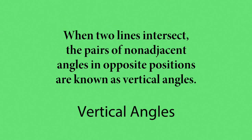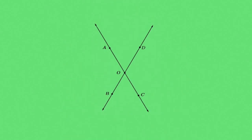When two lines intersect, four angles are formed. We say that the pairs of non-adjacent angles in opposite position are called vertical angles. Here we have two lines intersecting at point O. Angles AOB and angle DOC would be vertical angles, and angle AOD and angle BOC would be vertical angles.